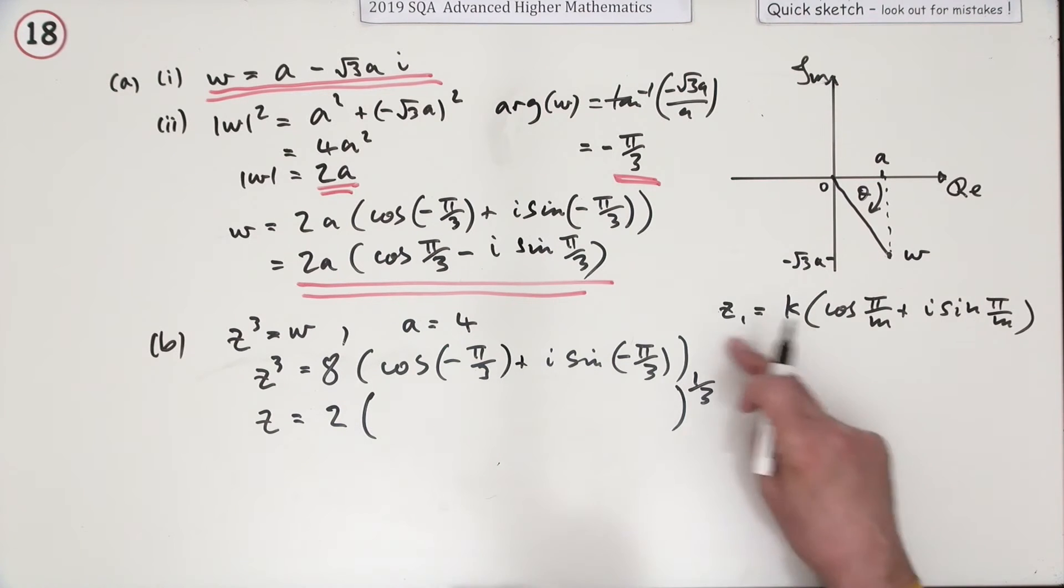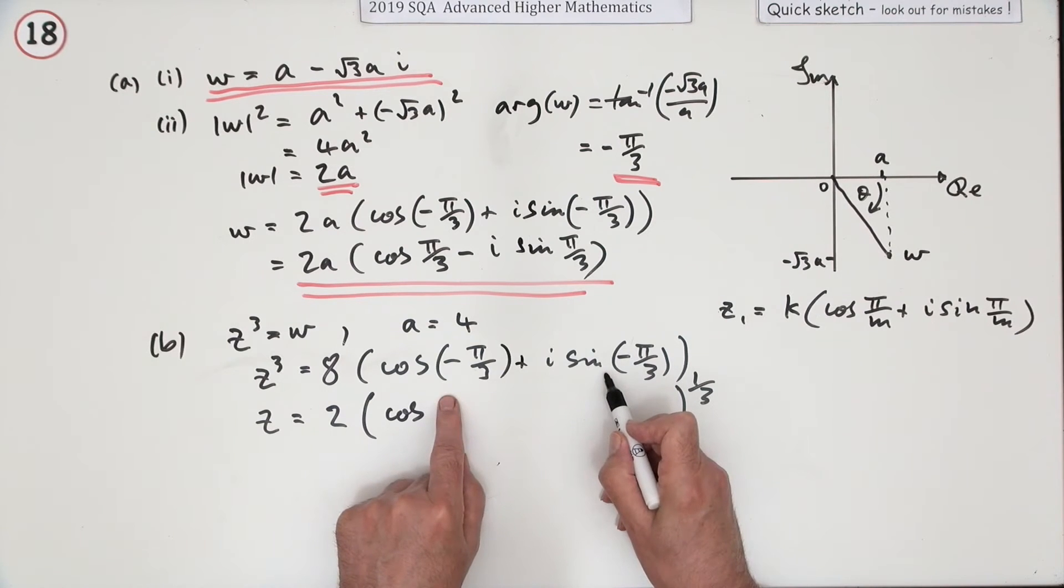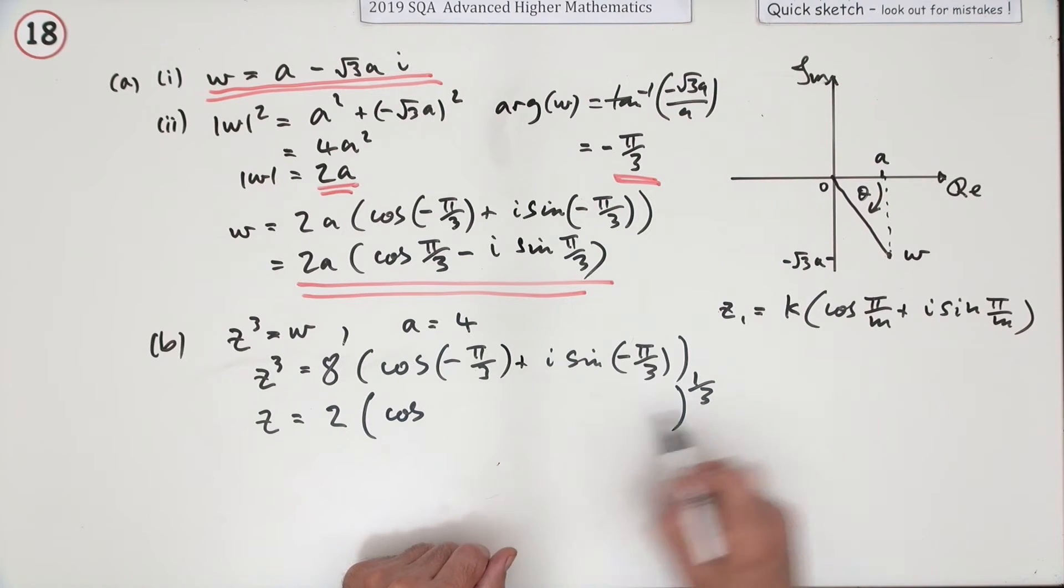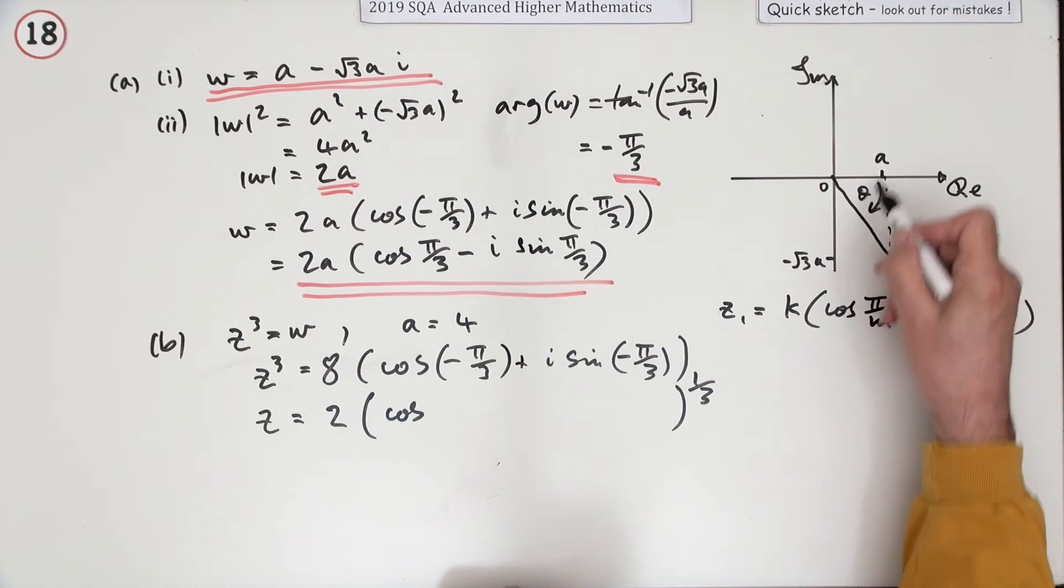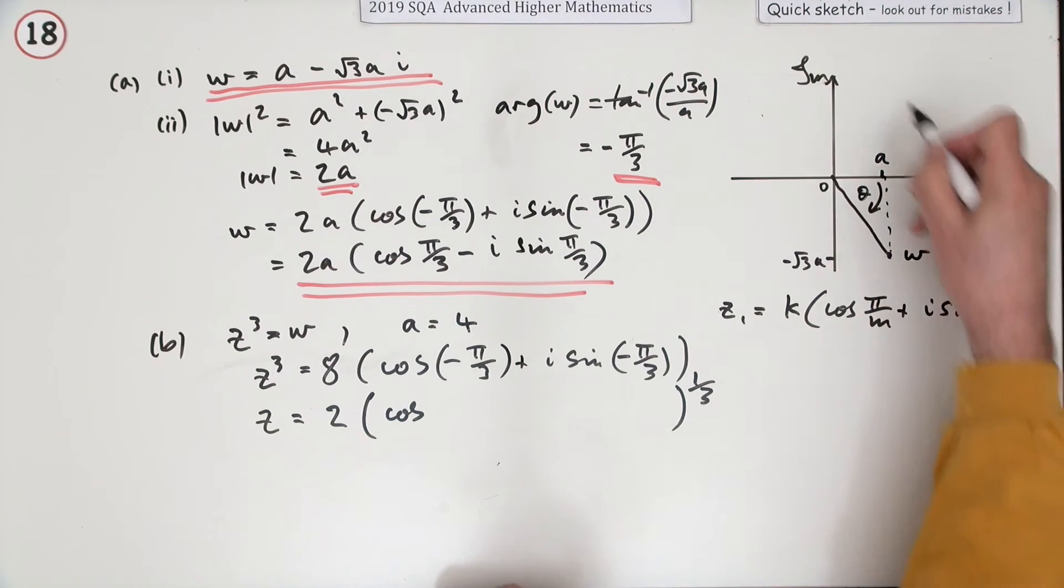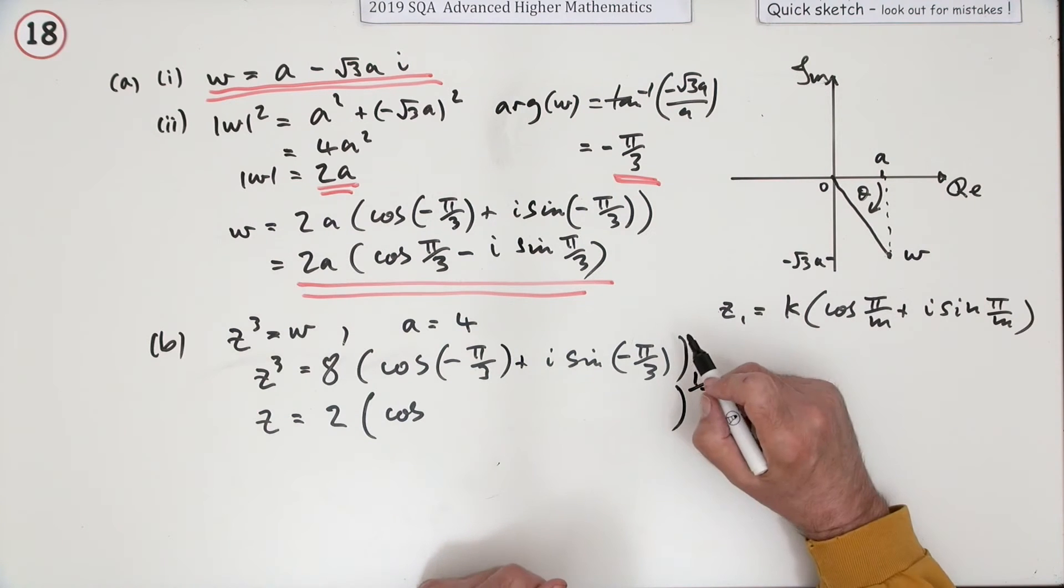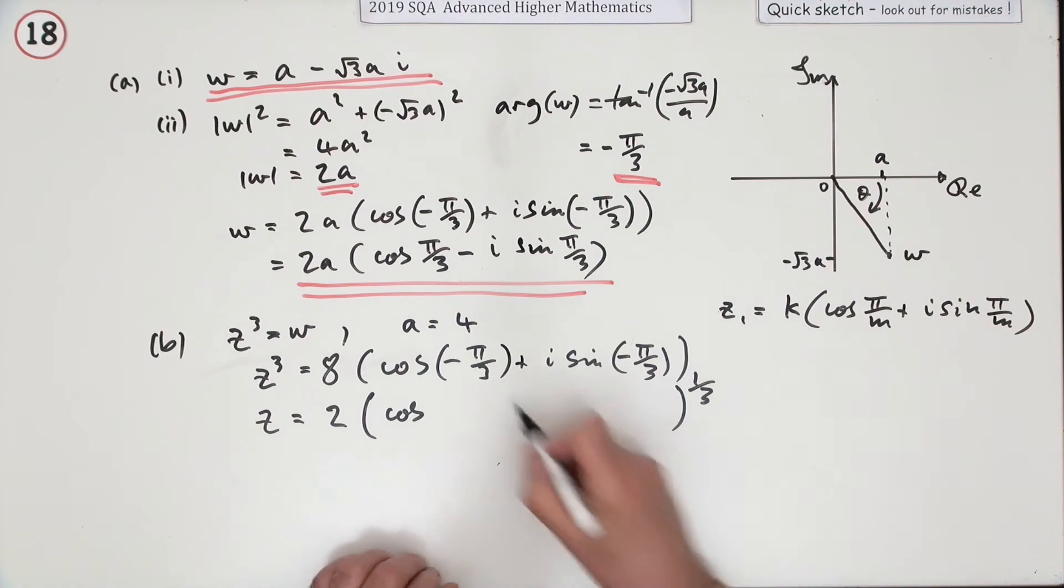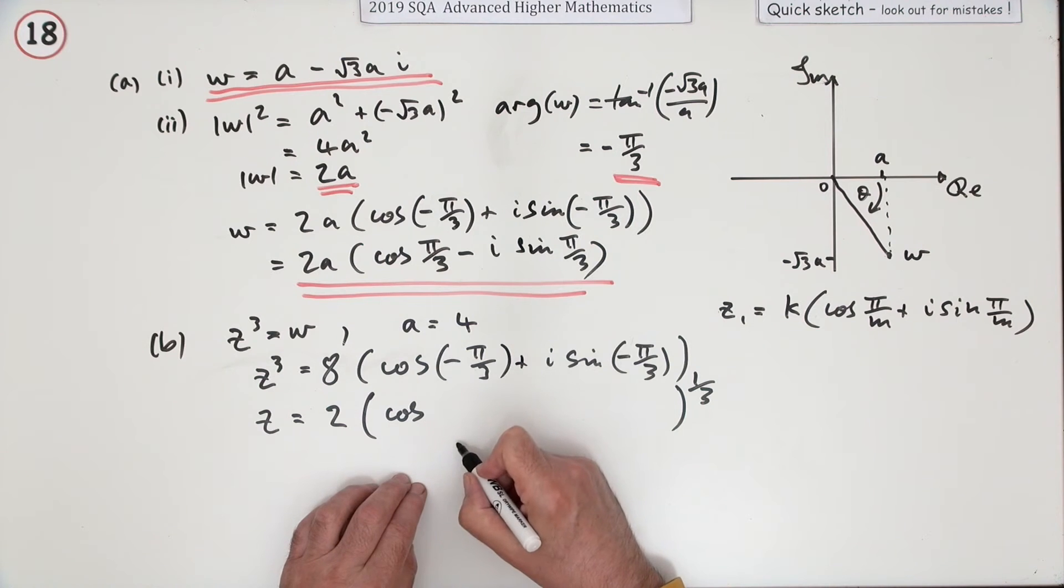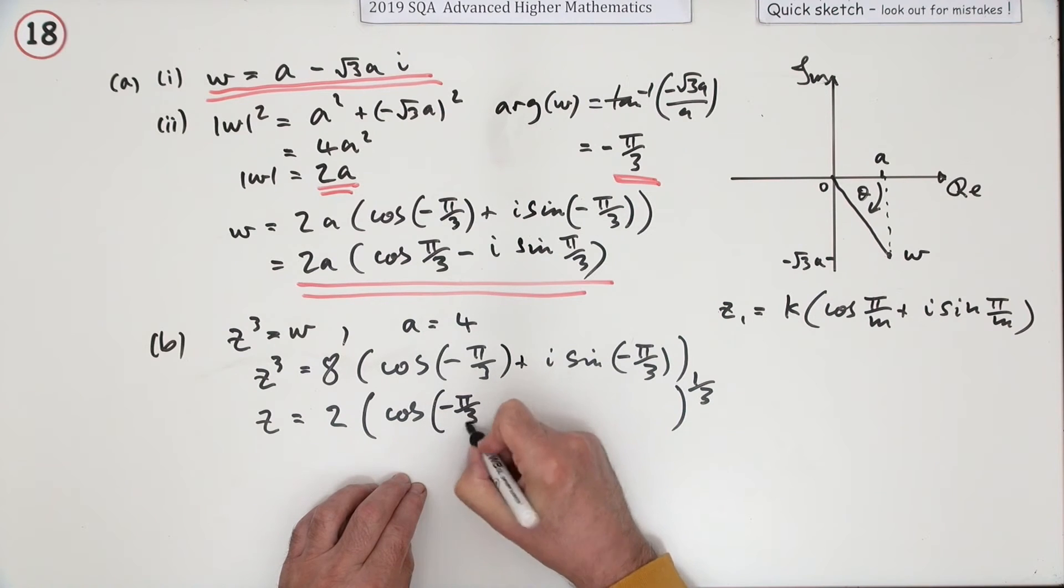De Moivre's theorem is that if you've got a power here, then you multiply the argument by the power. So if it's a fraction, you multiply by a fraction as well. However, as soon as you start dividing, it means that argument can change. Normally you would just say you've got a certain angle - if you added on 360, if you added on 2π, that just takes you back where you are and there's no point doing that. But there is if you're going to divide, because that will give a different result.